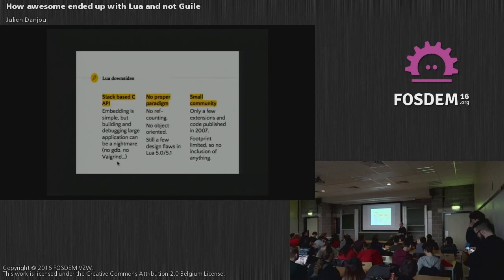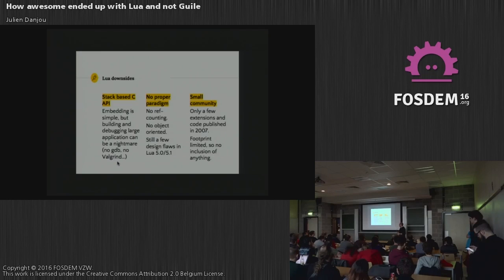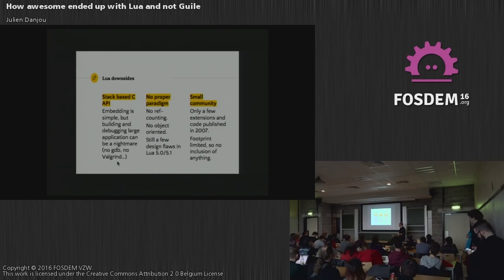The Lua downsides: the stack-based C API is really not something I like, because to debug it back then you had to use your own tools — it was not supported by GDB or Valgrind or whatever. So tracking memory leaks on the Lua stack was like a nightmare. There's no pairing, no objects, ref counting, etc., at least in Lua 5.0 or 5.1 we were using. The community was small but I think it really grew when we started to use it with Awesome.